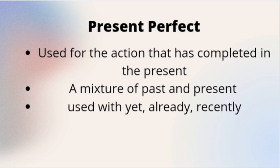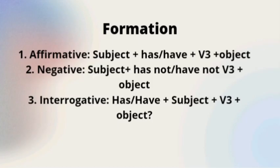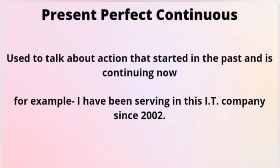This tense is also used with 'yet,' 'already,' and 'recently' — for example, I have not yet paid the fees; we have already enjoyed this movie. For the formation of present perfect: if affirmative, begin with subject, has or have, third form of the verb, object. 'Has' is used with third person singular and 'have' with others. If negative: subject, has not or have not, third form of the verb, object. If interrogative: has or have, subject, third form of the verb, object.